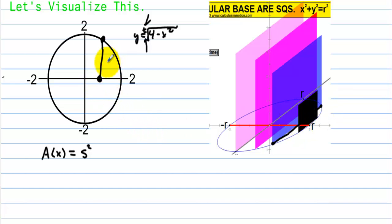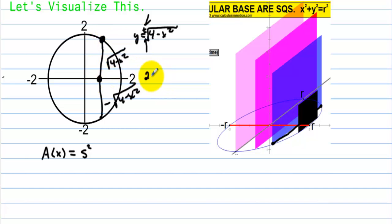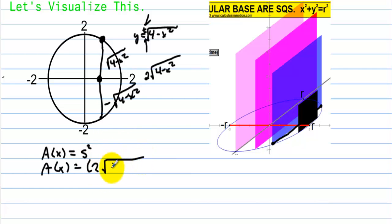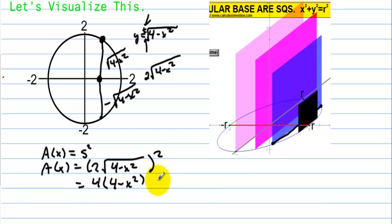Rather than adding the square root of 4 minus x squared to the negative square root of 4 minus x squared — which would cancel to zero — we say that if this is half the length of the side, then the entire length of the side is double that: 2 times the square root of 4 minus x squared. If the side of the square is 2 times the square root of 4 minus x squared, then we square that to get the area, which equals 4 times (4 minus x squared), and distributing gives us 16 minus 4x squared.